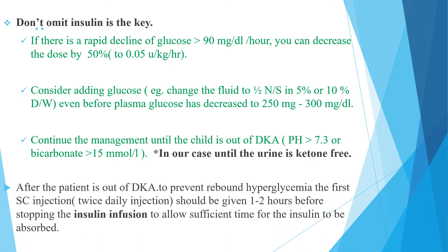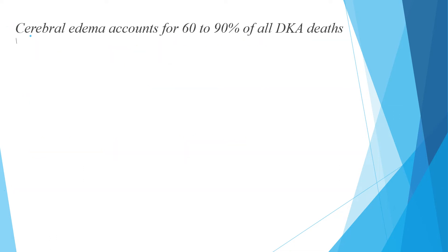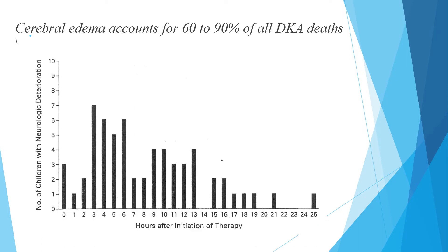After the patient is out of DKA, to prevent rebound hyperglycemia, the first subcutaneous injection should be given one to two hours before stopping the insulin infusion, to allow sufficient time for insulin to be absorbed. Cerebral edema is responsible for 60 to 90% of all DKA deaths and most commonly occurs within the first 12 to 24 hours after initiation of therapy, so we must strictly follow the patient using a DKA monitoring chart.